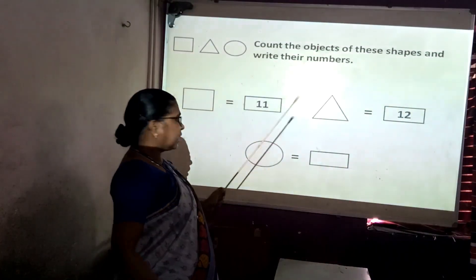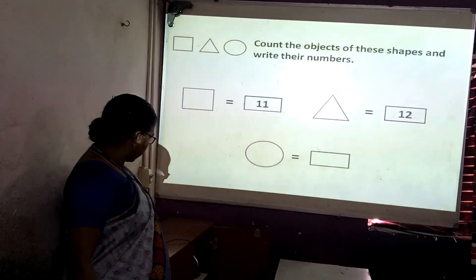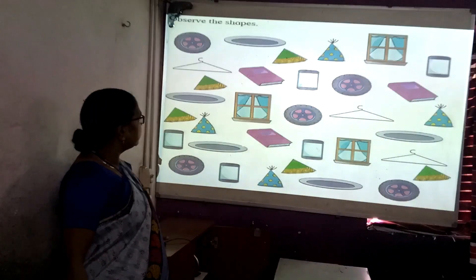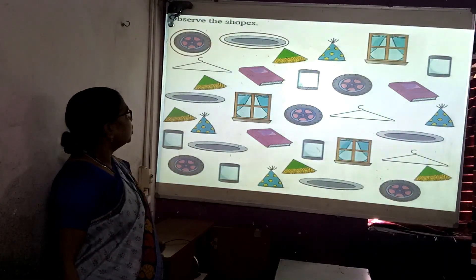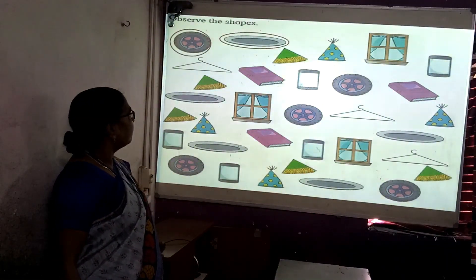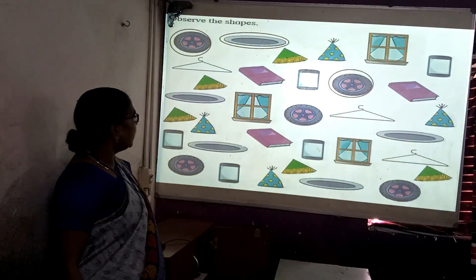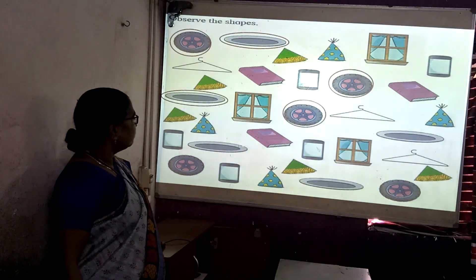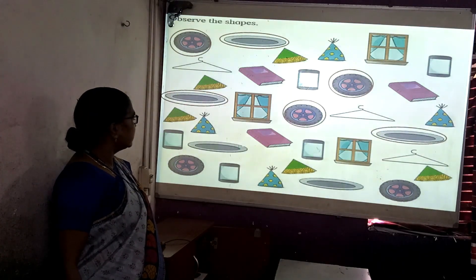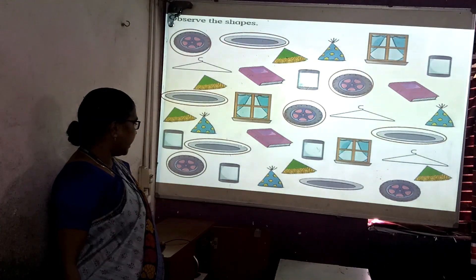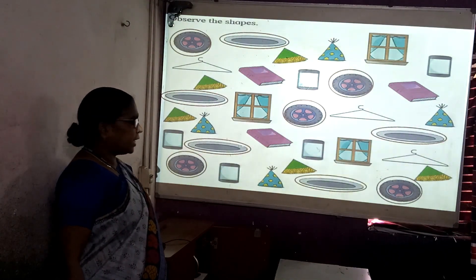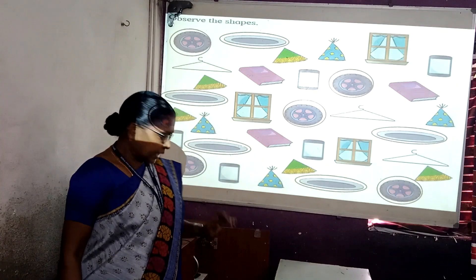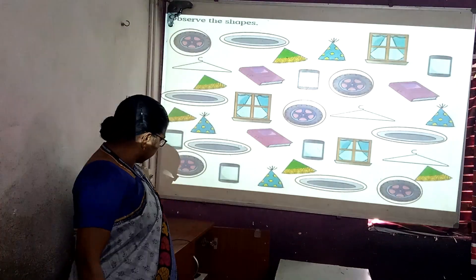Now next is circle. Let us see how many circles there are. One, two, three, four, five, six, seven, eight, nine, ten. How many circles are there? Ten circles are there.